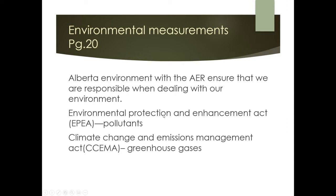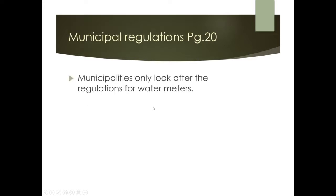At the municipal level — within a city or town such as Red Deer — authorities look after things like water. The water meter, for example, falls under municipal oversight, and municipalities may have regulations regarding that.